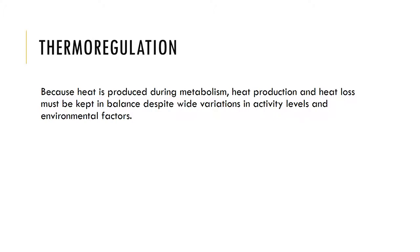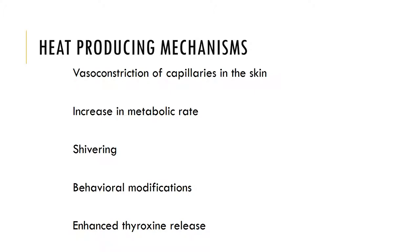Because heat is produced during metabolism, heat production and heat loss must be kept in balance, despite wide variations in activity levels and environmental factors. Thermoregulation is the homeostatic control of body temperature and is regulated by a balance of heat-producing mechanisms along with heat-loss mechanisms. Some of the heat-producing mechanisms are: vasoconstriction of the capillaries in the skin, an increase in metabolic rate, shivering, behavioral modifications, or enhanced thyroid hormone (thyroxin) release.